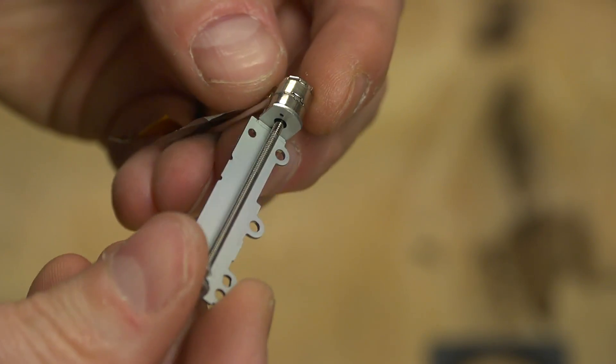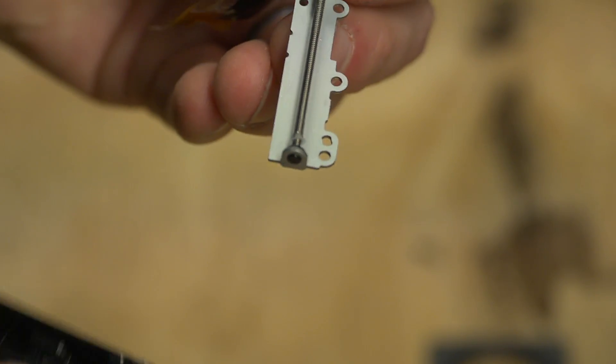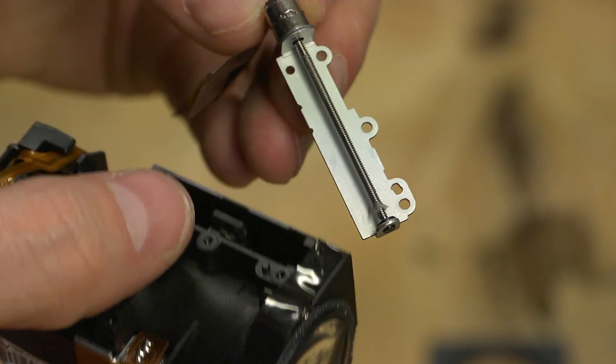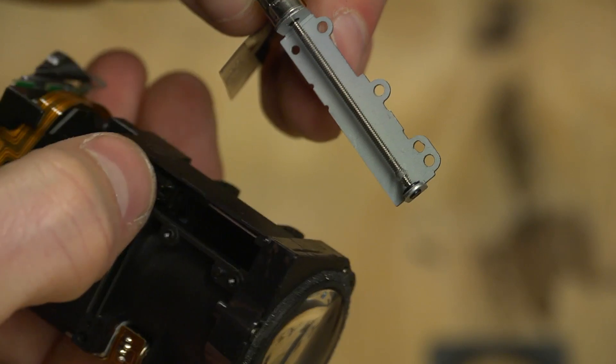This little part is kind of cool. It just came out of the lens assembly right there, and it's what changes, I guess, the focal length of the lens.